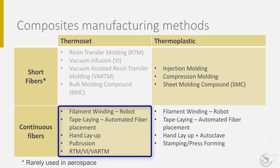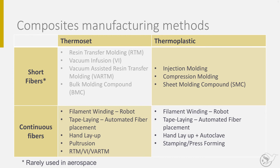The next processes are filament winding and tape laying by robot, which will be discussed on the next slide. The last process is pultrusion: a large number of rovings are pulled through an impregnation bath and through a die set that shapes and pre-cures the product. When cut to the right length, the product needs a post-cure.